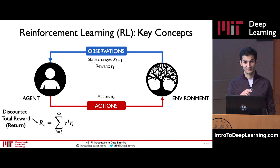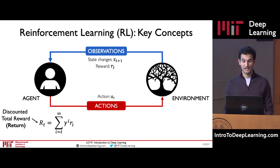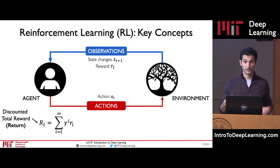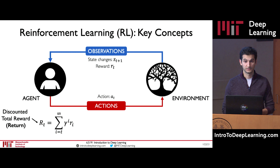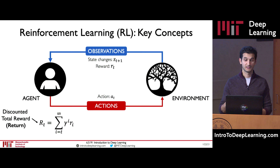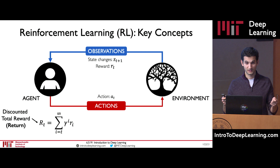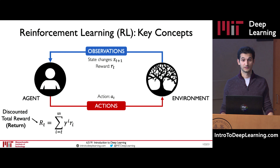The discounting factor is designed to make future rewards worth less than current rewards, enforcing some short-term or greedy learning in the agent. This is actually a very natural form of reward thinking: if I offered you a reward of $5 for taking this class today, or $5 five years from now, you would prefer the reward today because you have some internal discounting factor for those future rewards that makes them less valuable. The discount factor is multiplied by future rewards as discovered by the agent as it moves through the environment, effectively dampening those rewards' effect on the agent's choice of action.